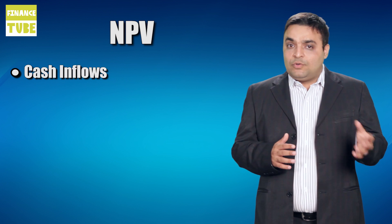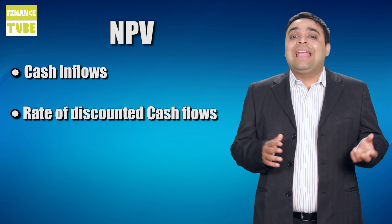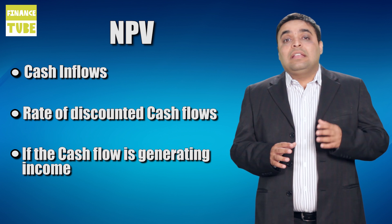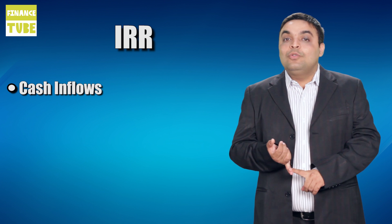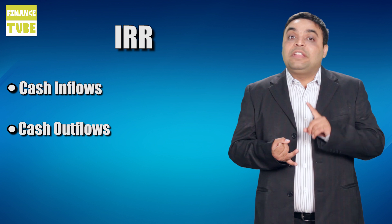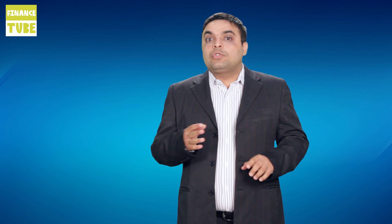Let's consider NPV and IRR. NPV is predominantly dependent on your cash flows, on the rate at which you discount those cash flows, and whether it is making money or not. IRR, however, is more dependent on the magnitude of cash flows, the frequency of it, and the initial investment. So you can say NPV, apart from cash flows, is also dependent on the rate.